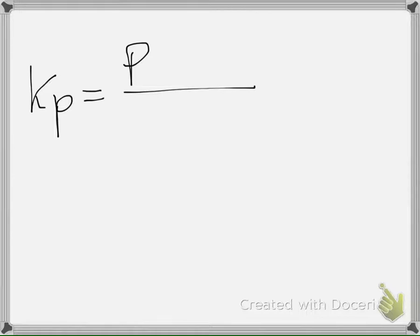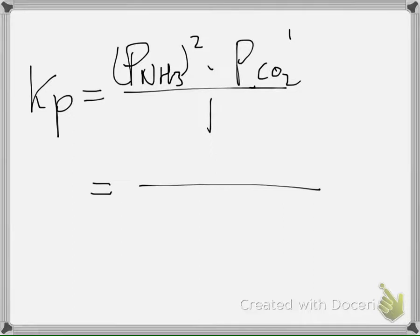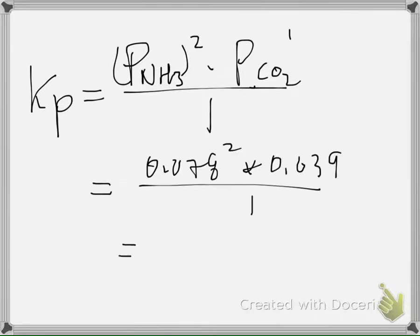Writing Kp: Kp = (partial pressure of NH₃)² × (partial pressure of CO₂)¹ / reactant. Since the reactant is a solid, it equals 1. Plugging in: Kp = (0.078)² × (0.039) / 1 = 2.37 × 10⁻⁴. The answer is D.